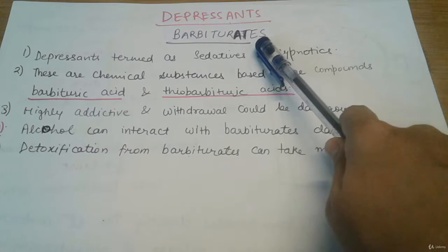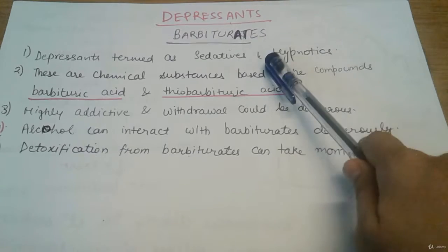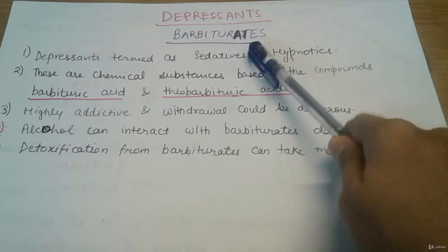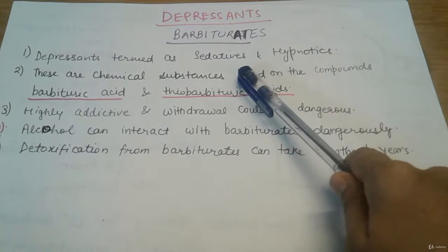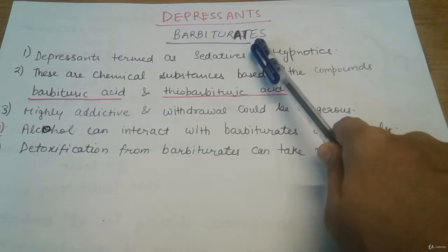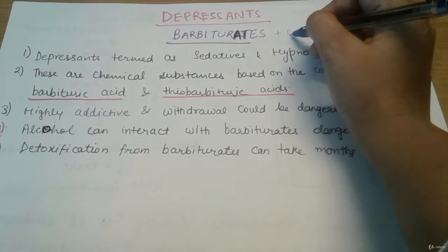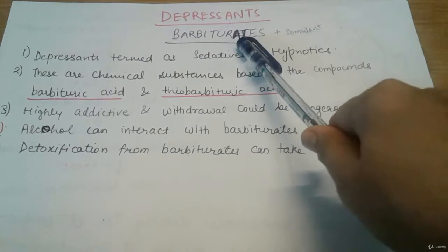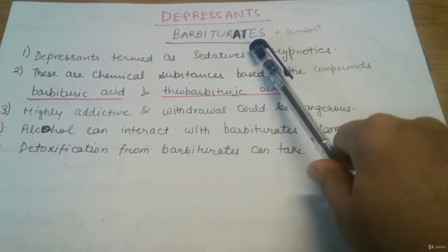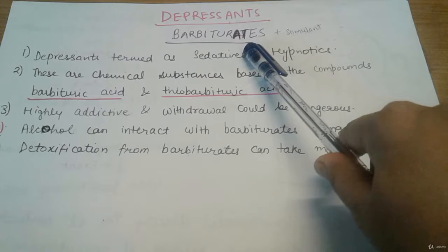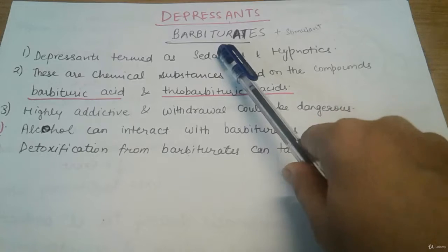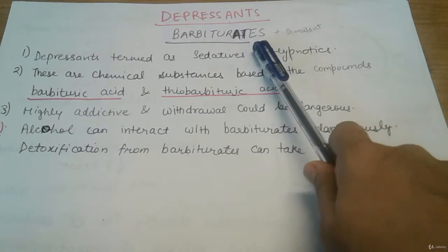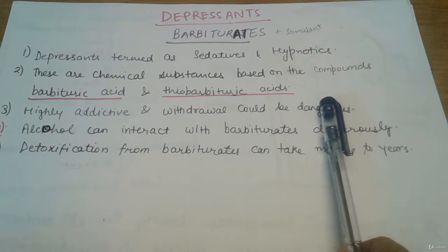Many people take barbiturates together with amphetamine — amphetamine being a stimulant discussed in the previous lecture. When both substances are taken together, they become highly addictive. Addicts take barbiturates along with stimulants like amphetamines to increase the depressant effects of the barbiturates, making it a highly addictive combination. Moreover, many celebrities have died from overdose of barbiturates, which is why it is a very harmful drug.